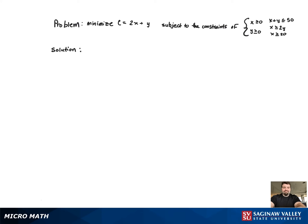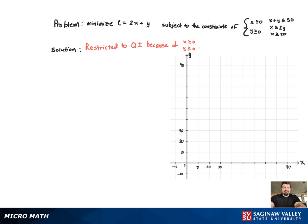For this linear programming problem, we will first look at the two constraints: x greater than or equal to 0, y greater than or equal to 0. This means we're restricted to the first quadrant.